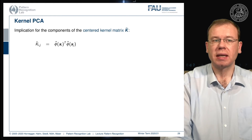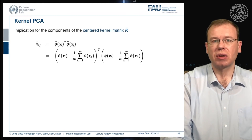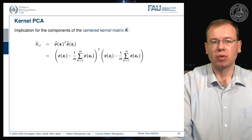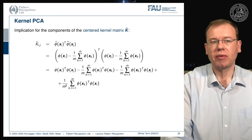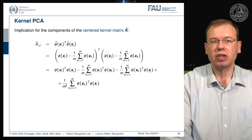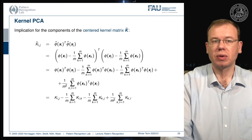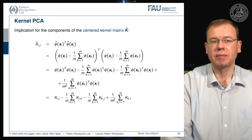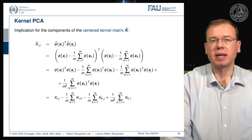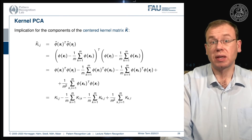We can write the centered kernel as the inner product of our feature transforms in the transformed space, then plug in the definition of Phi tilde where we subtract the means. This is an inner product of two long vectors, and working through the math we end up with inner products over the feature-transformed vectors. We can rewrite all of these terms using only the kernel function, so we can produce a centered kernel matrix using only the kernel function. This is an important property, since kernel PCA assumes the data to be centered.